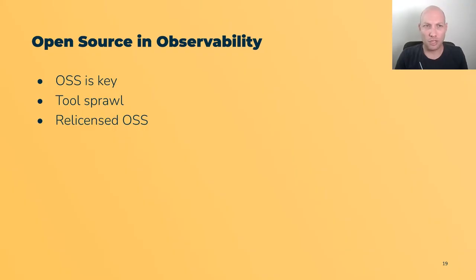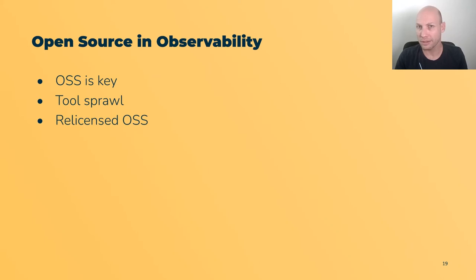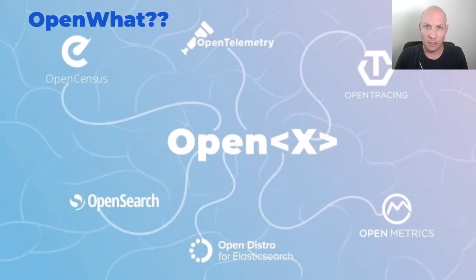To summarize the three insights: we see that open source is key to observability, which is very good news. On the other hand, we see a challenge with tool sprawl and the resulting issues with data silos. And we see the re-licensing of open source that changes the landscape.